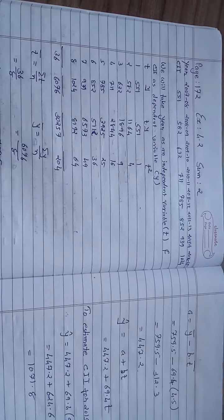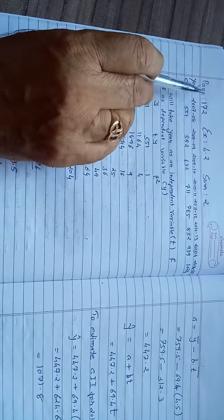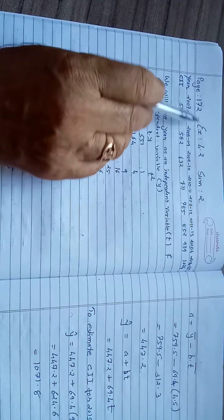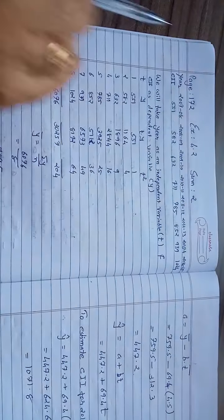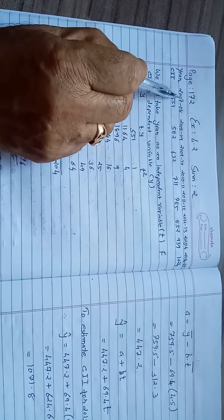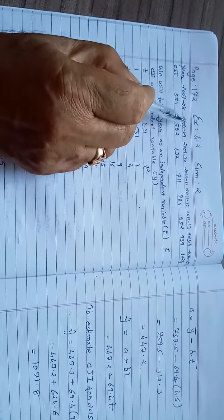We will now solve the sum by least square method on page number 172 in textbook exercise 4.2, sum number 2. The year is given in this way: 2007 to 2008, 2008 to 2009, 2009 to 2010.